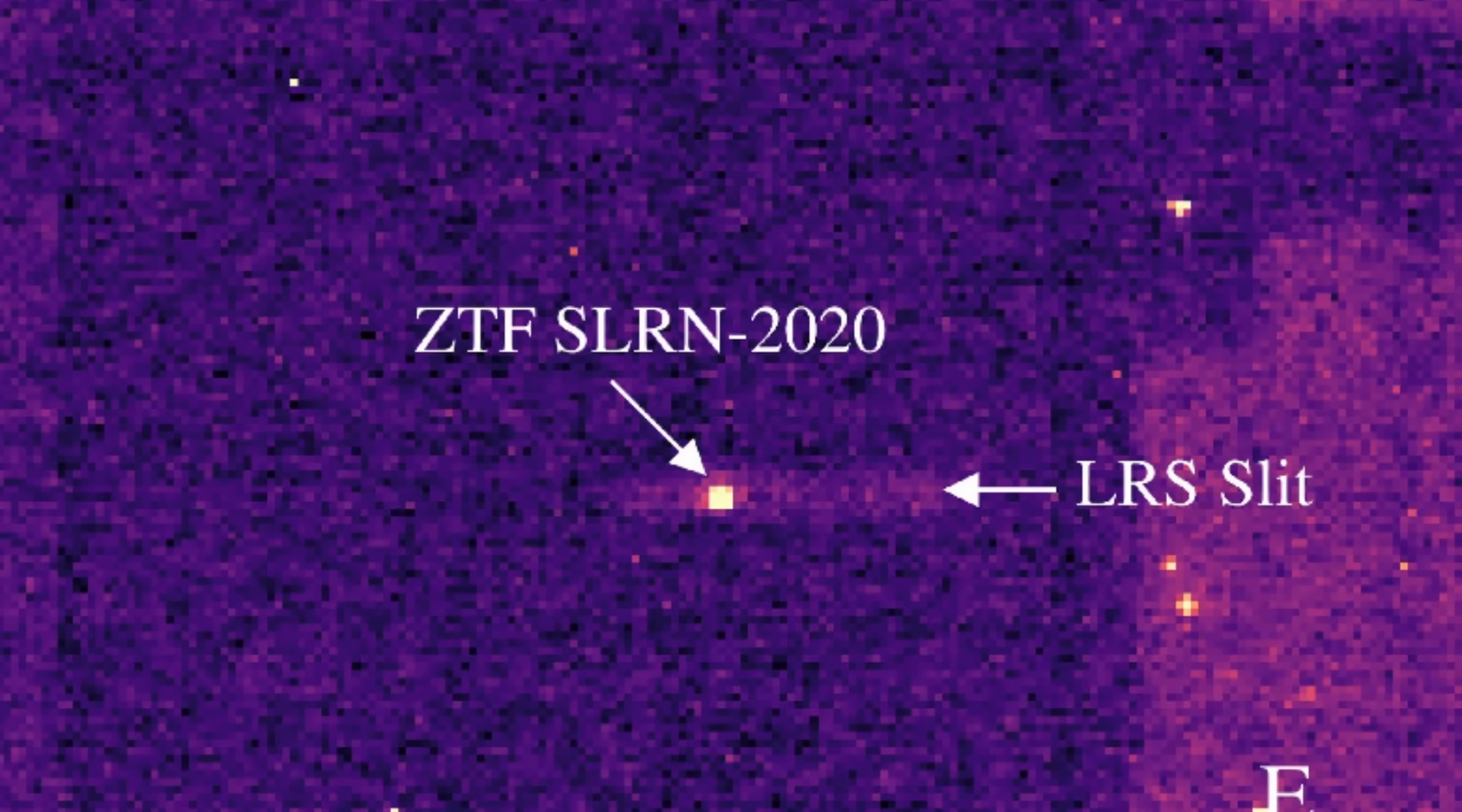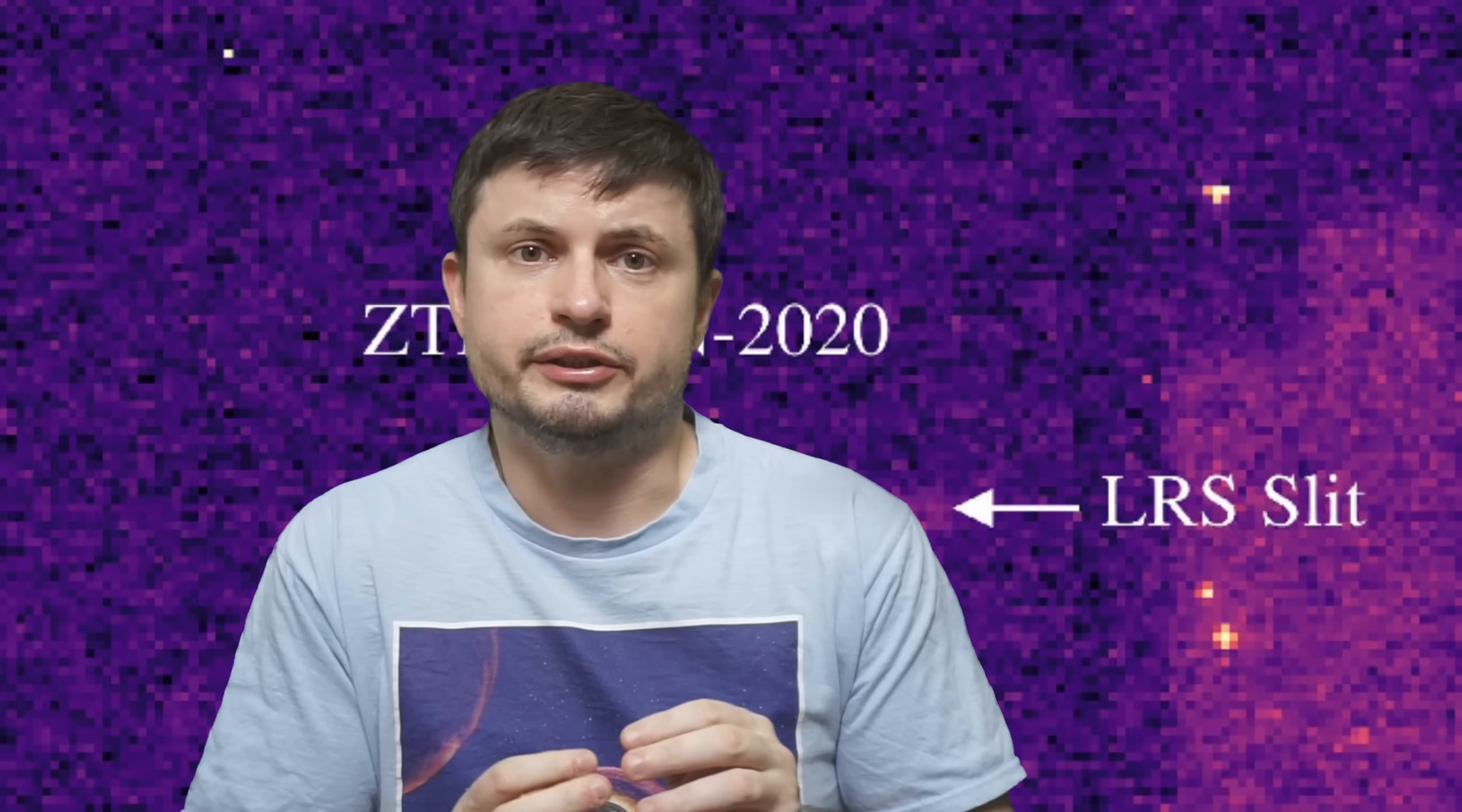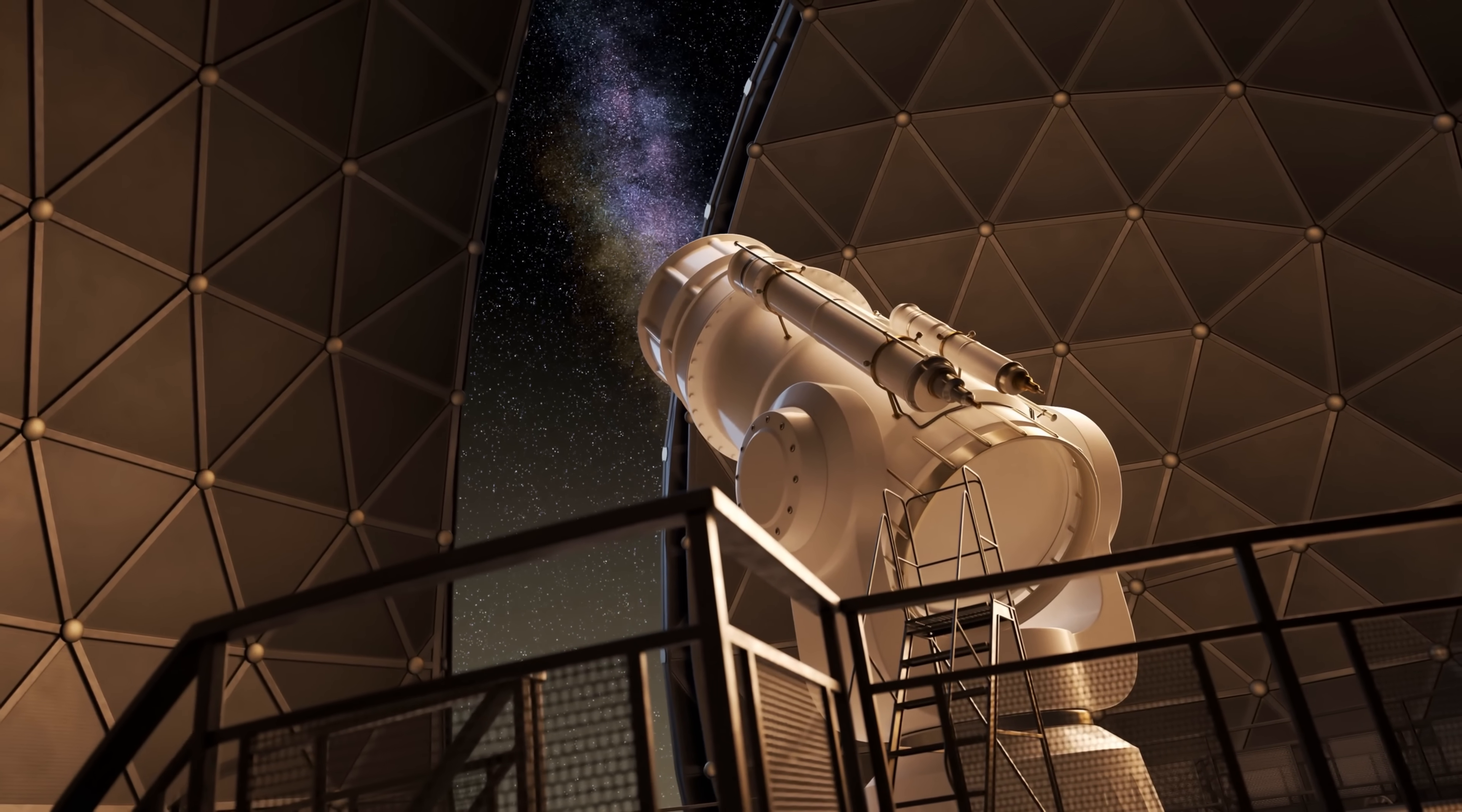And here it was in regards to ZTF SLRN 2020, an unusual and somewhat bright emission suddenly detected 12,000 light years away from us in the year 2020. This was part of ZTF, or the Zwicky transient facility, which is a kind of an automated system named after the Swiss astronomer Fritz Zwicky that observes visible and the infrared wavelengths in order to detect transients or sudden bursts of light somewhere out there in the universe.